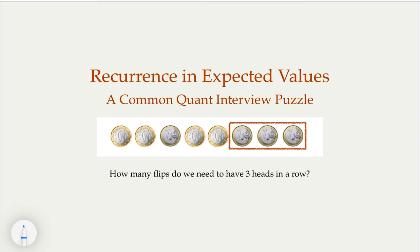This is a common quant interview puzzle. We are given a fair coin — that is, head, tail, half-half probability. We try to get three heads in a row. The question is, on the average, how many flips do you have to do in order to see three heads in a row?